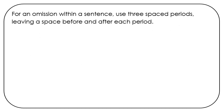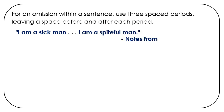For an omission within a sentence, use three spaced periods, leaving a space before and after each period. For example: 'I am a sick man. . . . I am a spiteful man.' Notice that there is a space before and between each period.